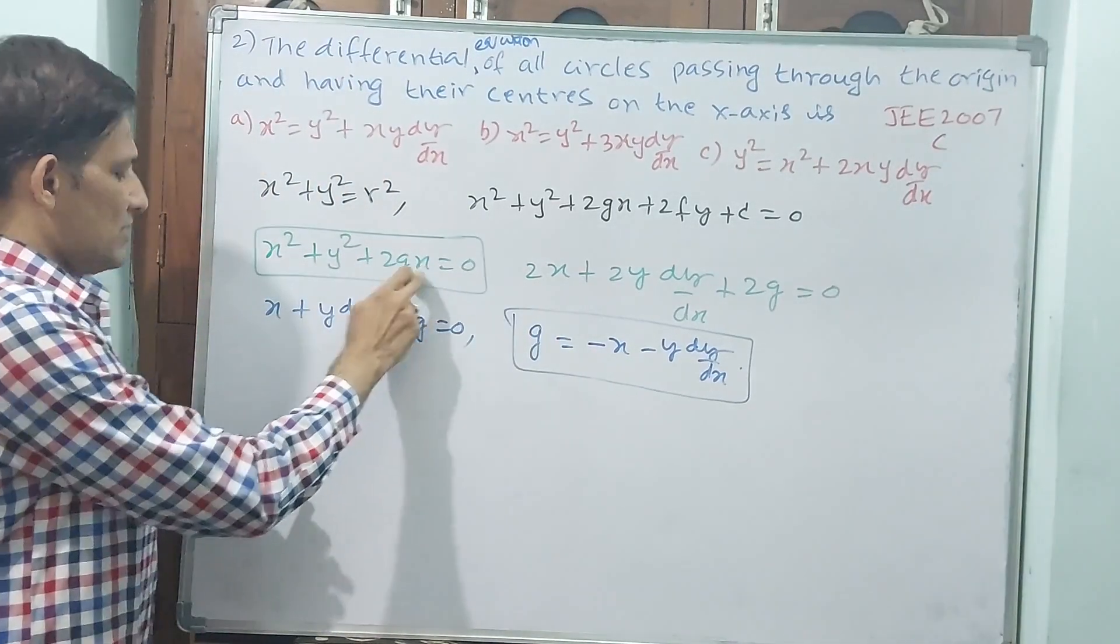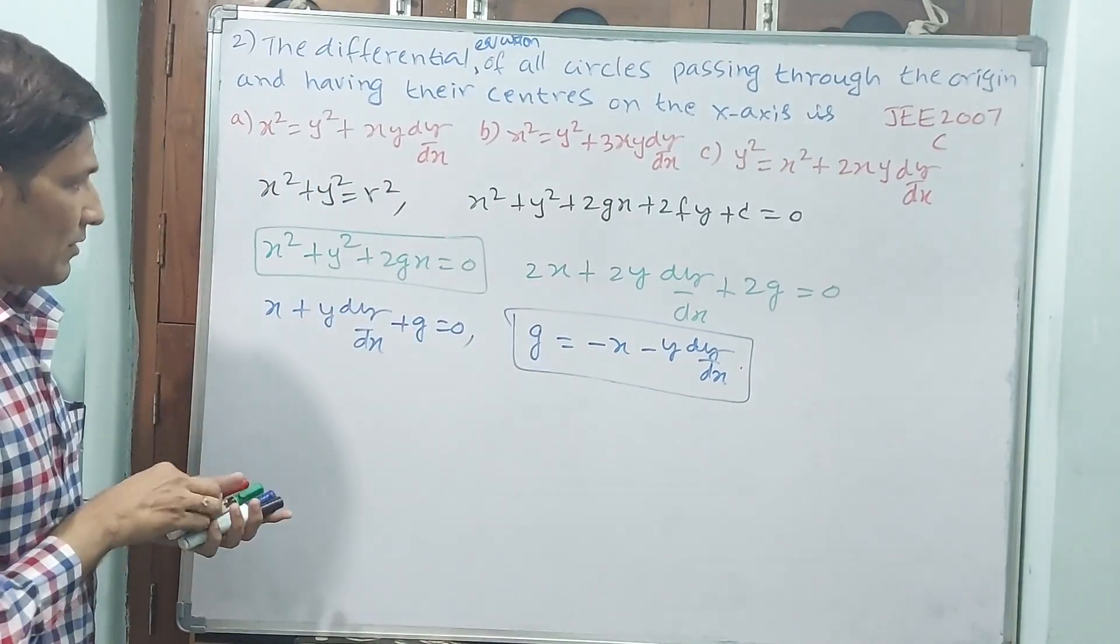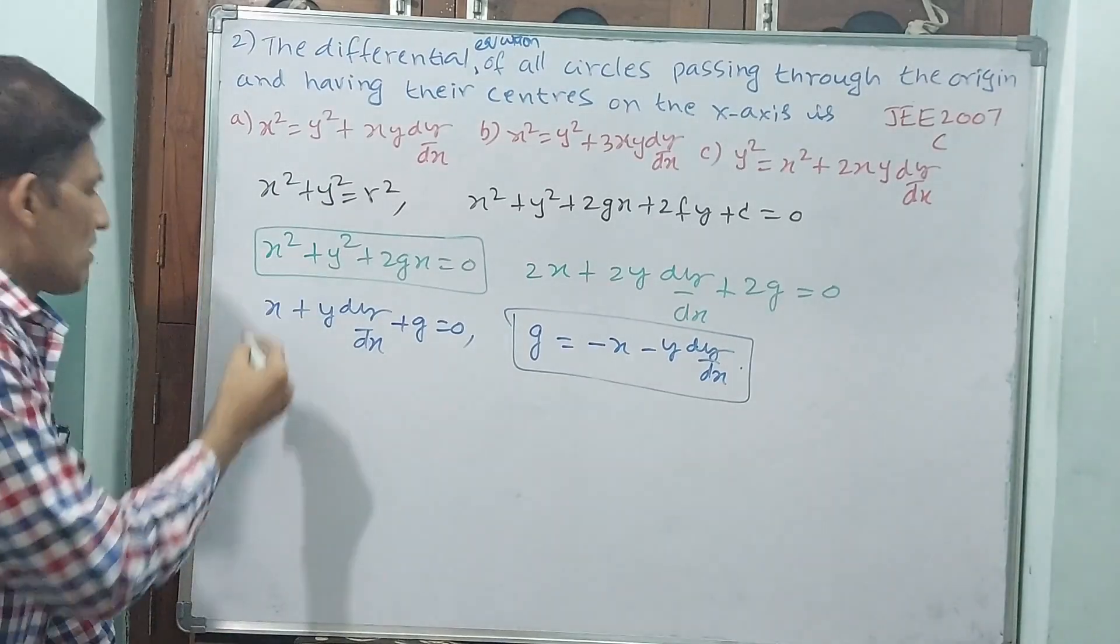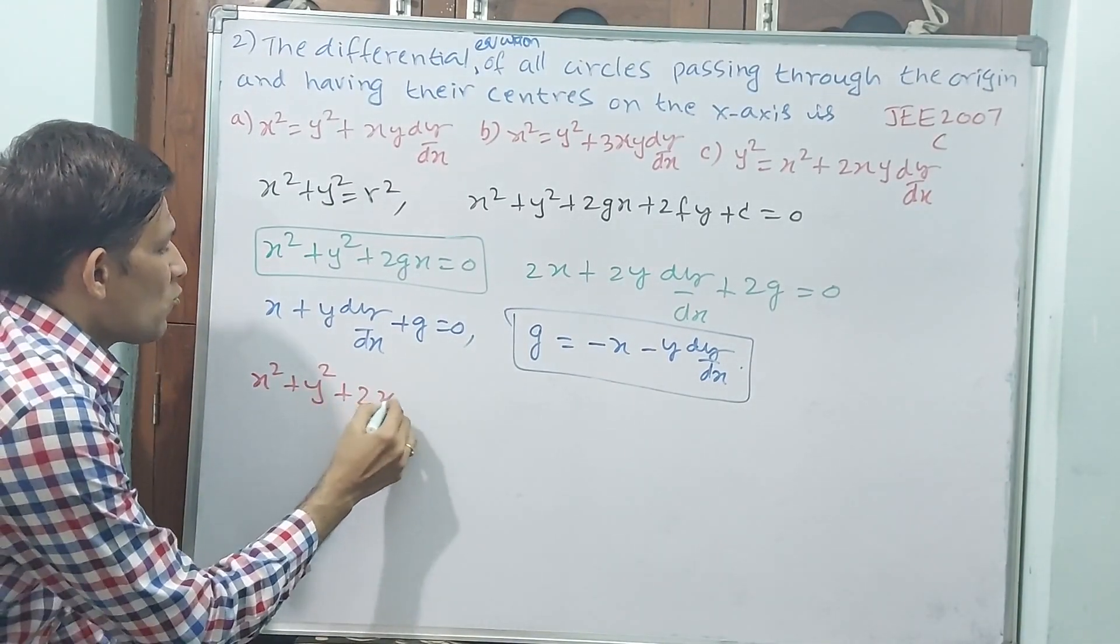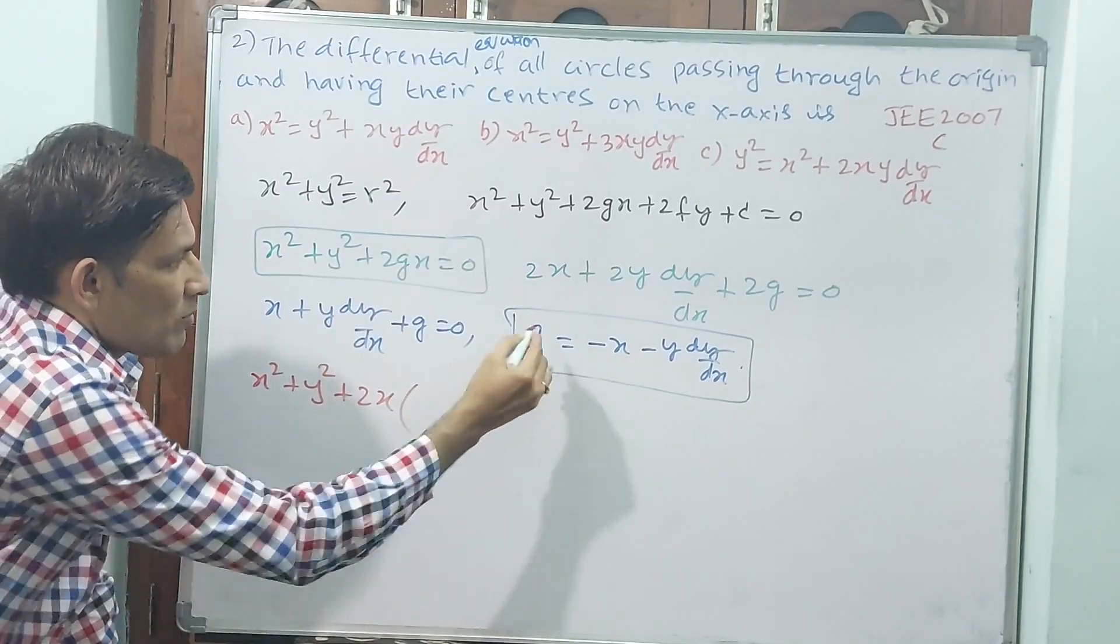Now, I am substituting this g value in this equation. Okay. If I substitute, what will happen? x² + y² + 2x into g. g-value is how much? Minus x minus y dy/dx.